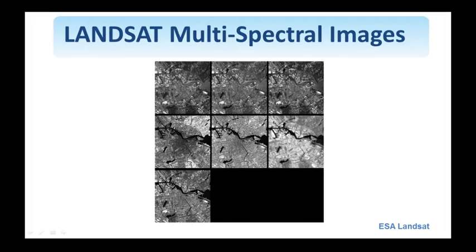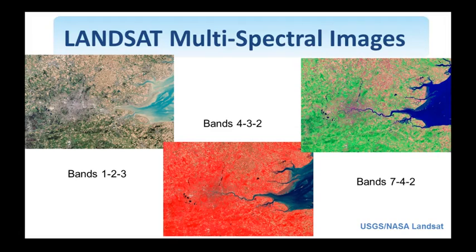Shown here are the seven bands of a Landsat multispectral image of the city of Amsterdam, which was also shown in the introduction of the course. The bands include blue, green, and red, plus four infrared bands. Instead of looking at the bands one at a time in grayscale, we can combine them to produce color images. These combined images are from the city of London. Combining the three visible bands produces an image with natural-looking colors — the city appears gray, water is blue, and vegetation is green.